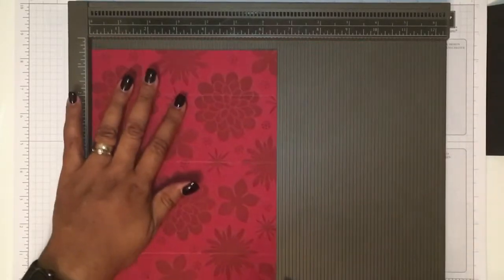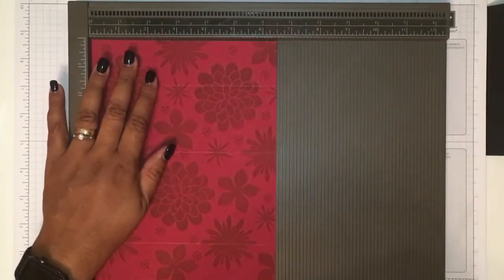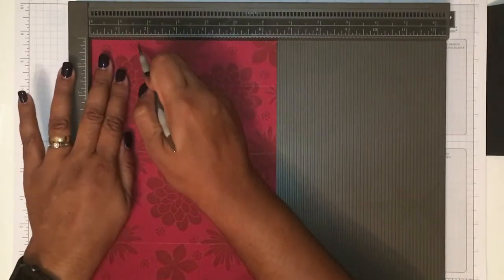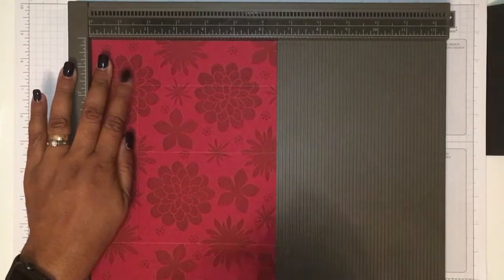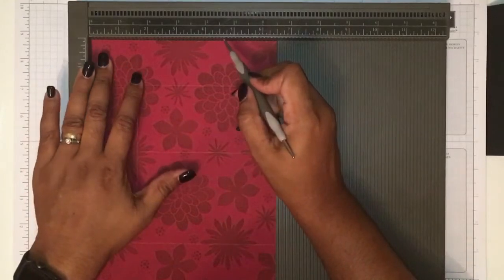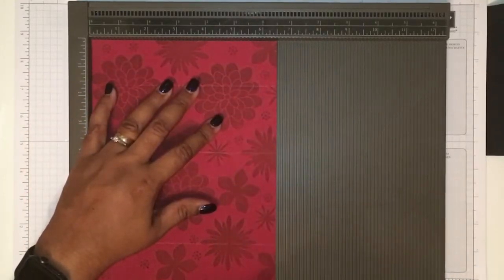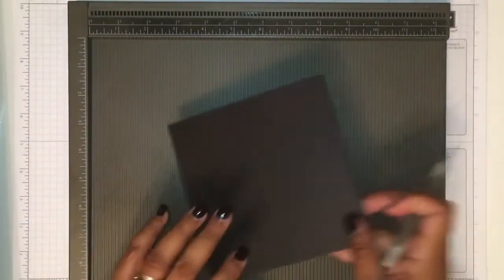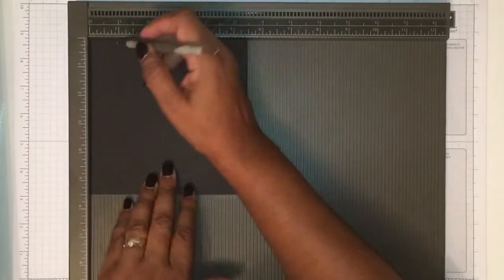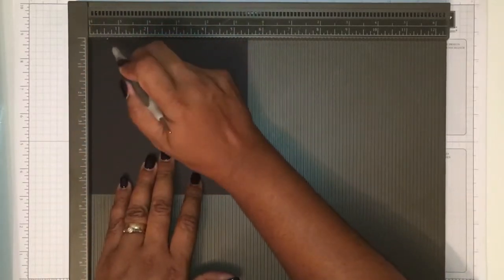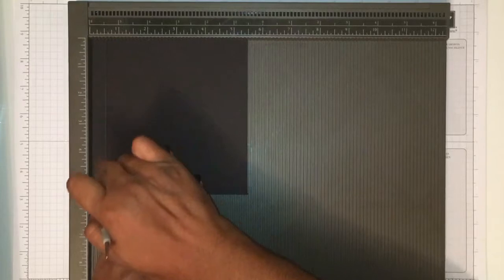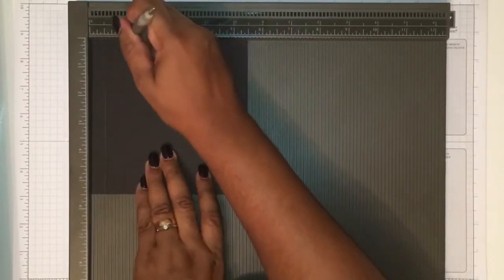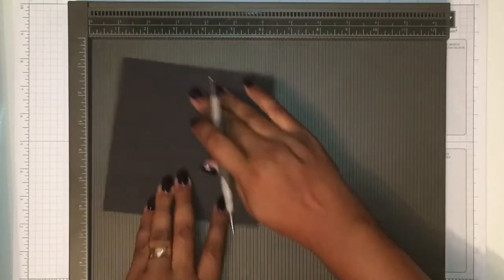We're gonna turn around and score at one and five eighths and four and seven eighths. I'll put that to the side and I will score the holder at half an inch. Make sure this is in the right place - and one and a quarter on all four sides.